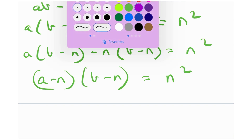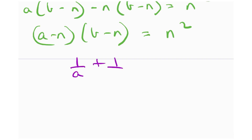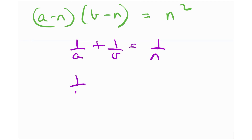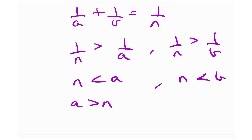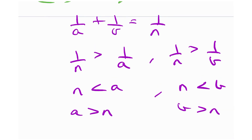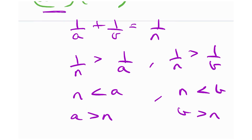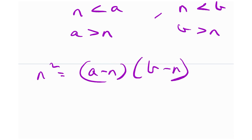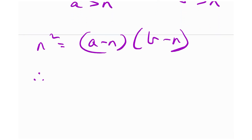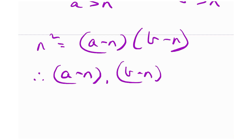Notice that in 1/a + 1/b = 1/n, since two positive quantities sum to 1/n, we have 1/n > 1/a and 1/n > 1/b, meaning a > n and b > n. Therefore a - n and b - n are both positive quantities. So n² equals the product of two positive quantities (a - n) and (b - n).